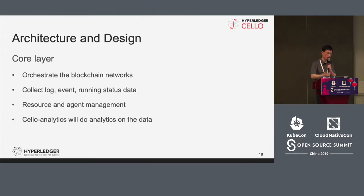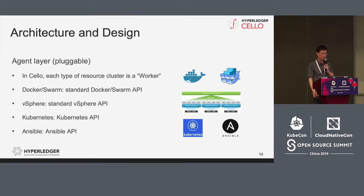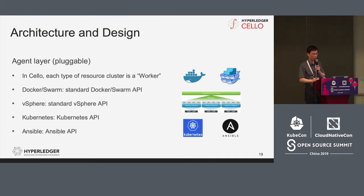The core layer includes the orchestration of the blockchain network, log events, resource and agent management, and collection and analysis of data and information. Some functions are already ready. The agent layer is pluggable and open — currently we have five agents, but in the future we can support even more platforms. Each type of resource cluster is called a worker. The operator provides the worker to the organization admin to create peers and different nodes to have a usable network, using standard Docker Swarm API, vSphere API, and Kubernetes API to manage the base layer infrastructure.